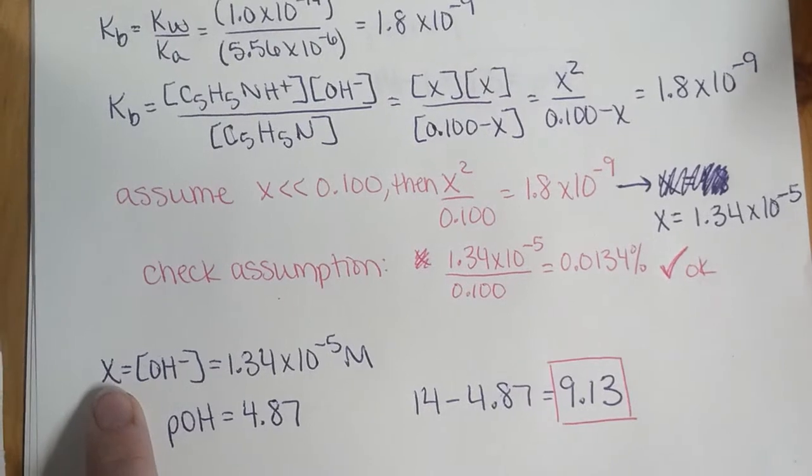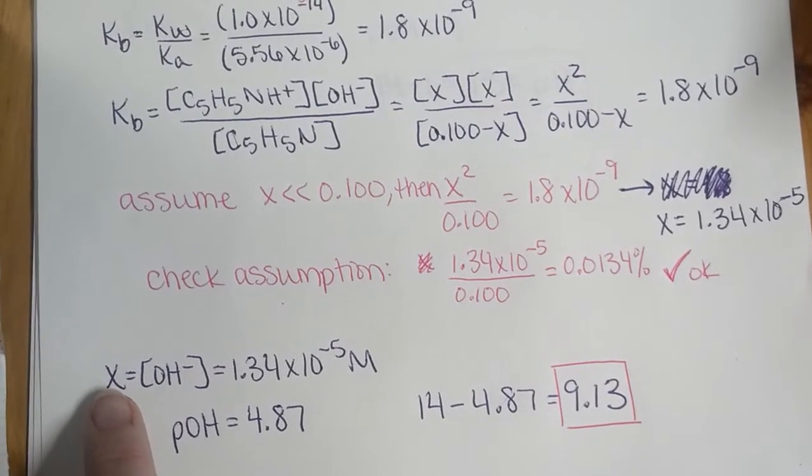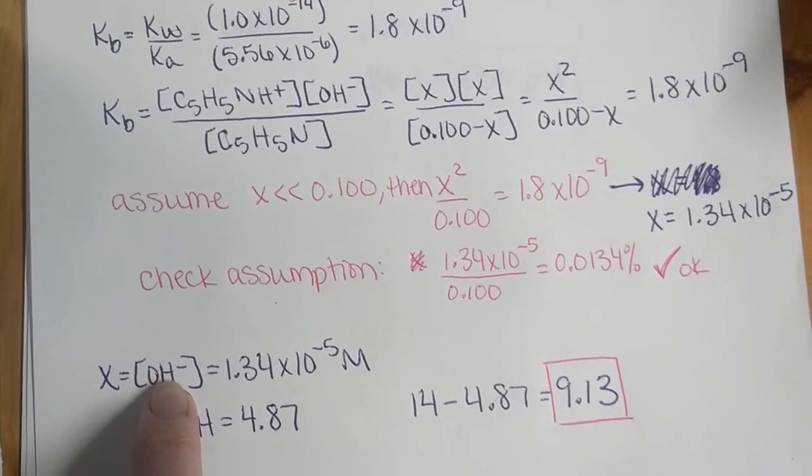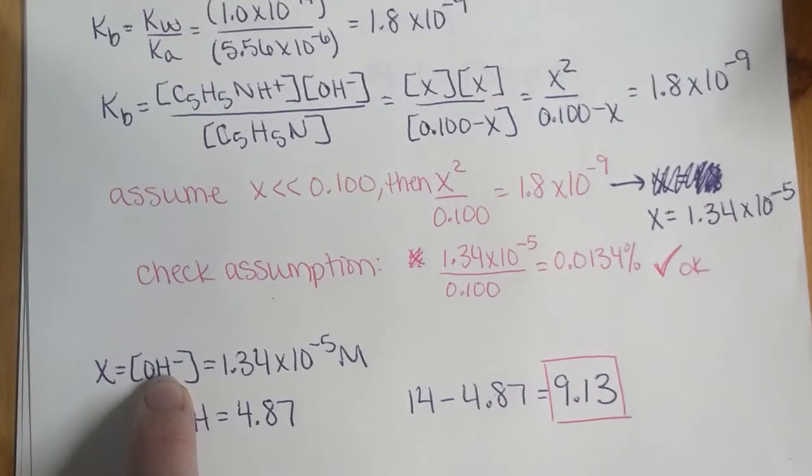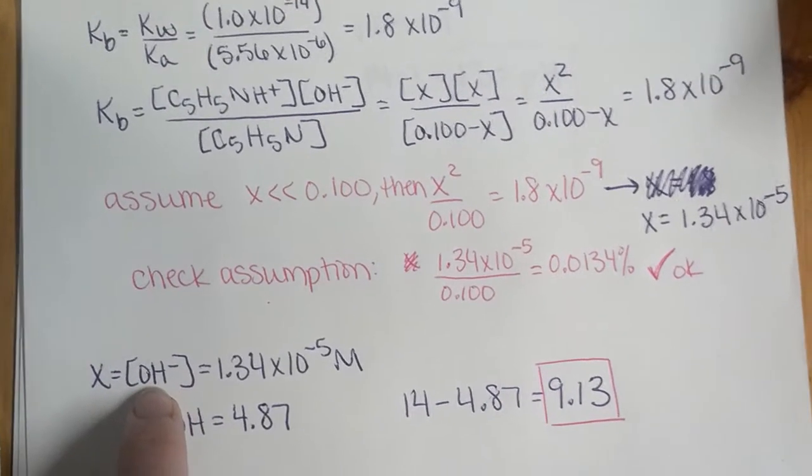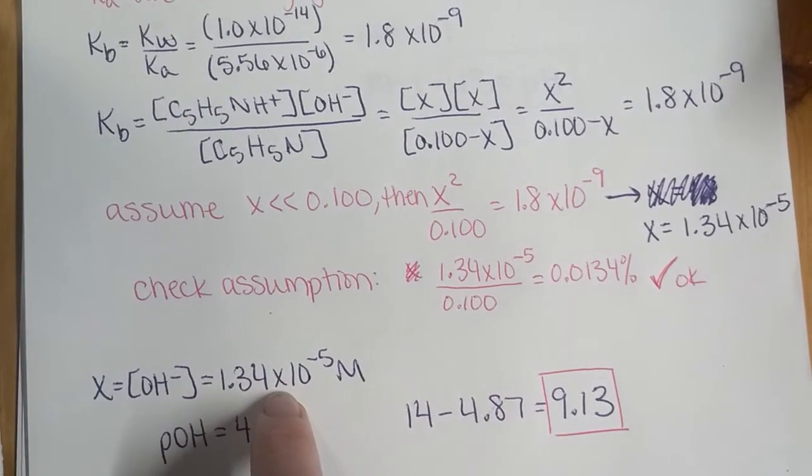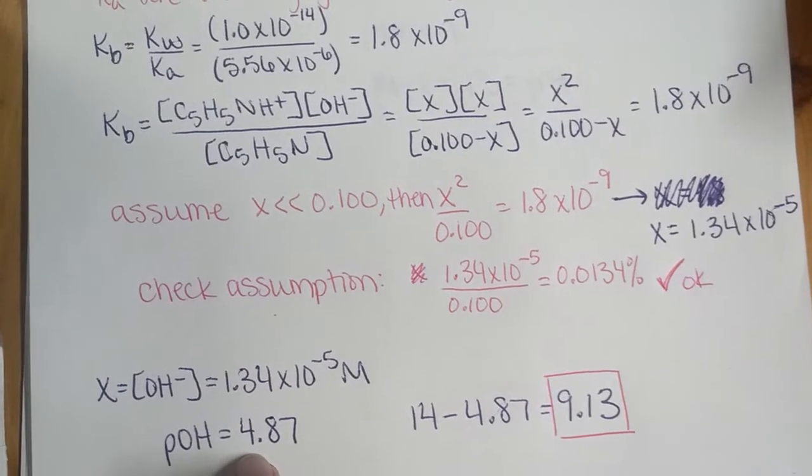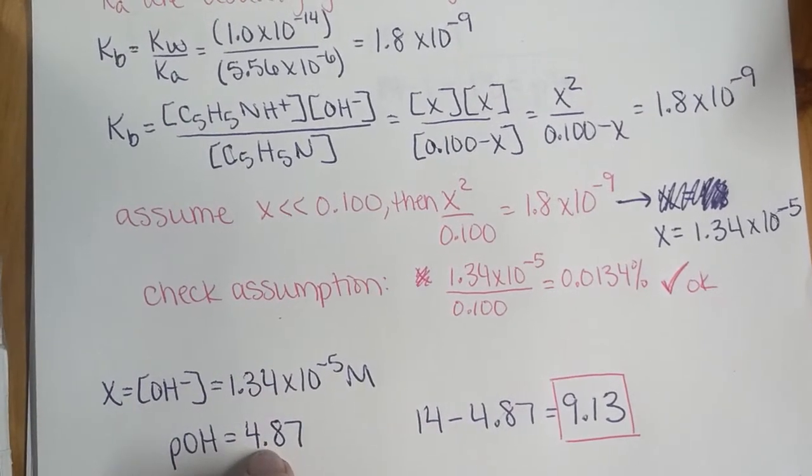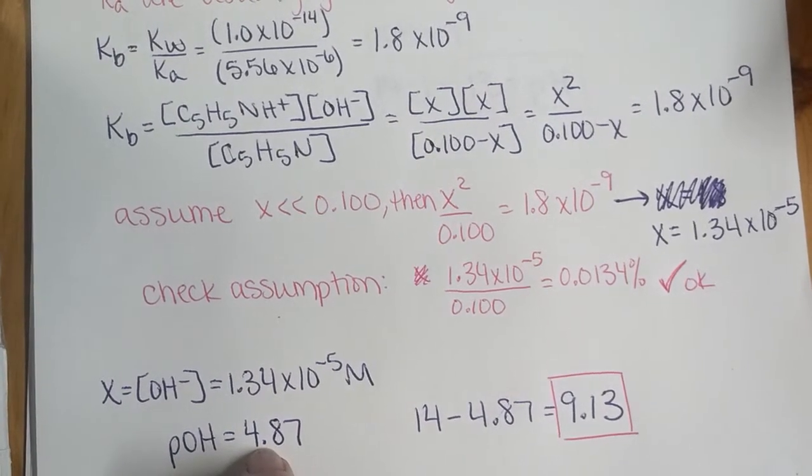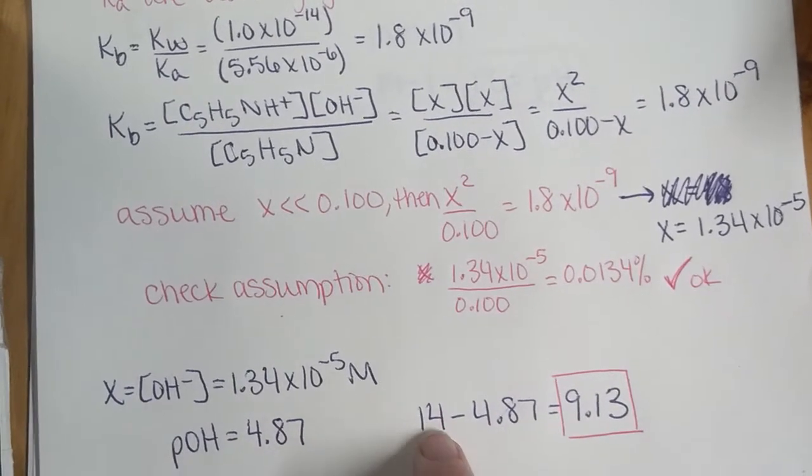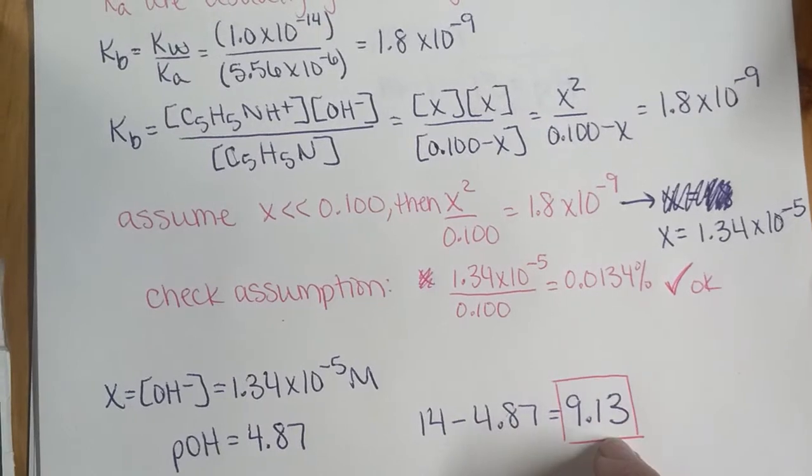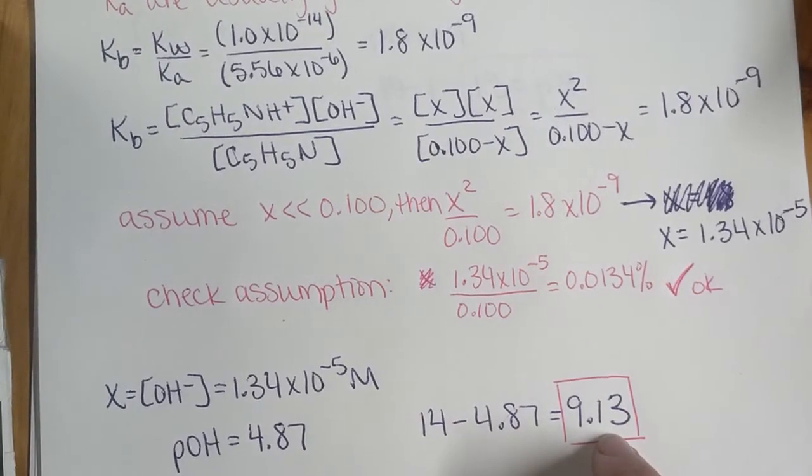So here's what's different from our last example, is that X is equal to the hydroxide ion concentration, not the hydronium. So we have hydroxide ion is 1.34 times 10 to the negative 5 molar. And take the POH of that, take the negative log to get 4.87. Then to get our pH, take 14 minus 4.87, and our pH is equal to 9.13.